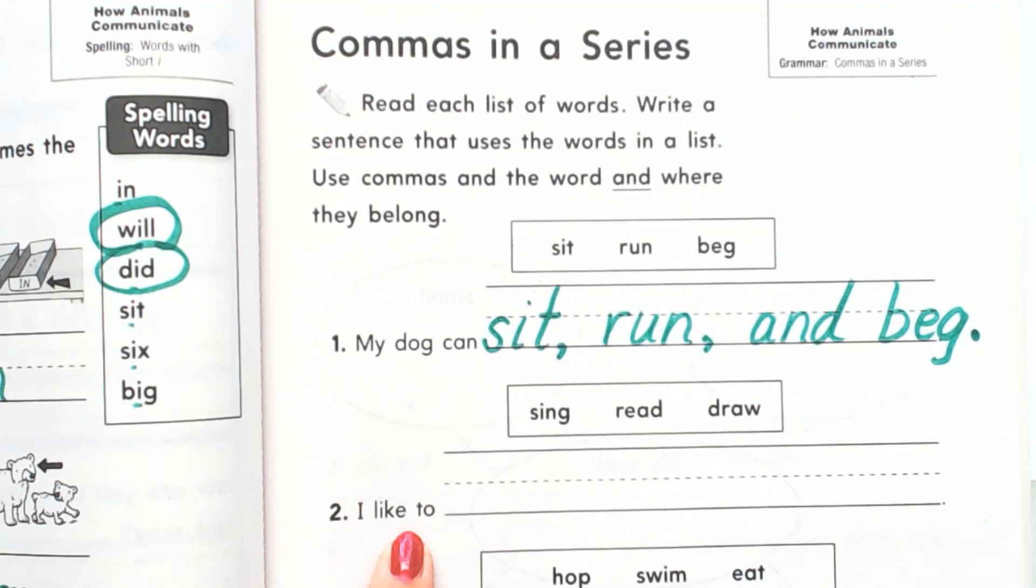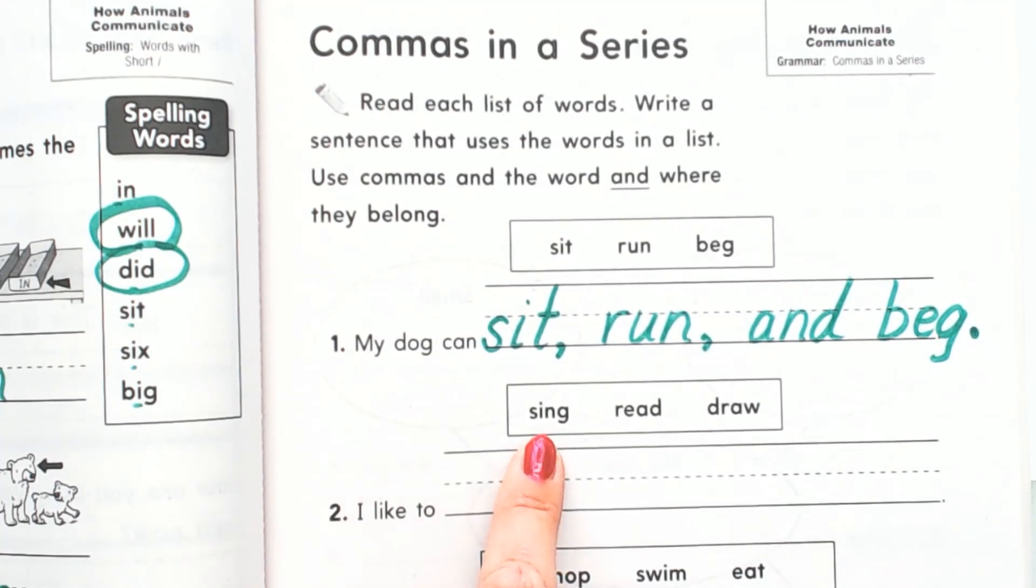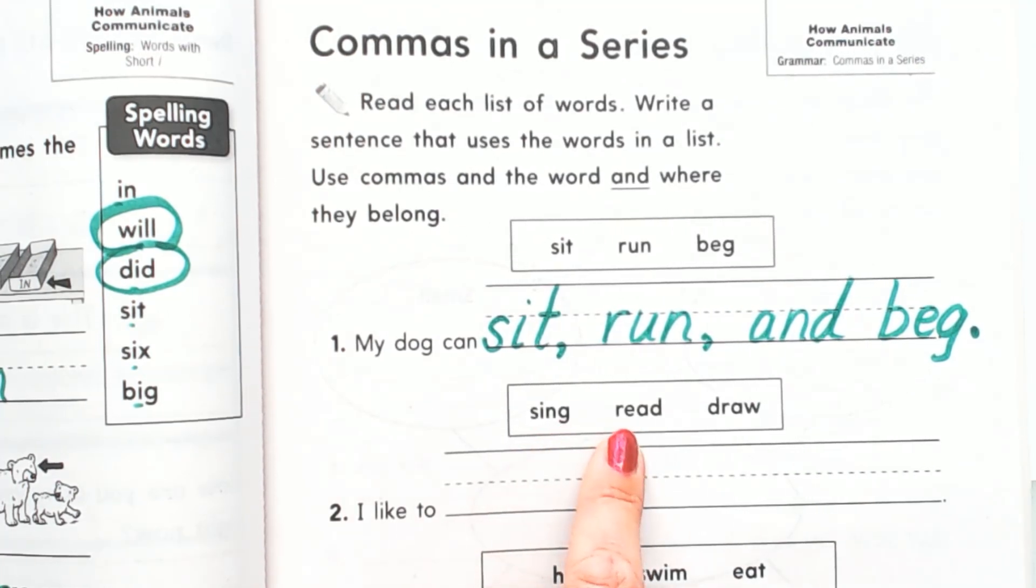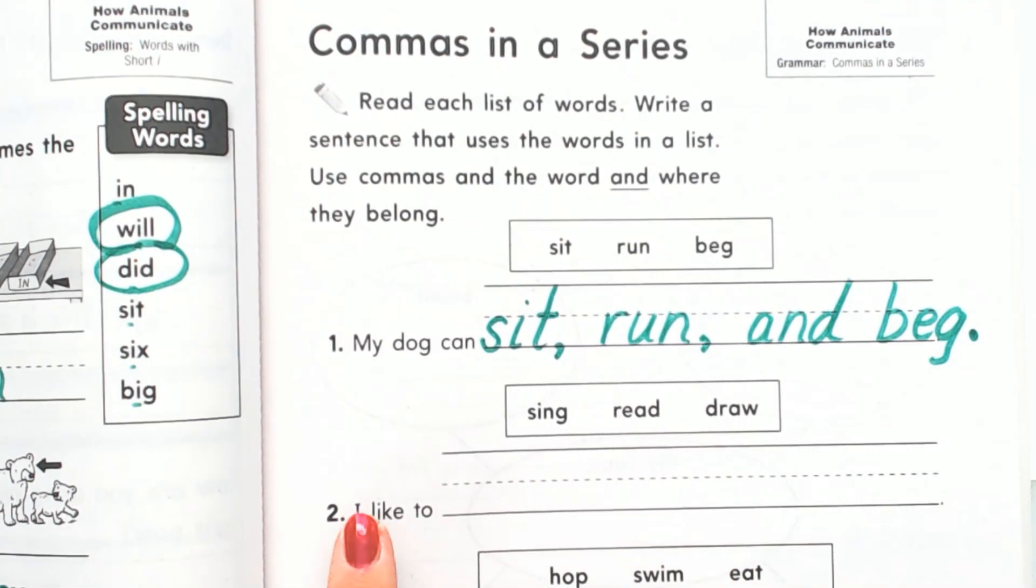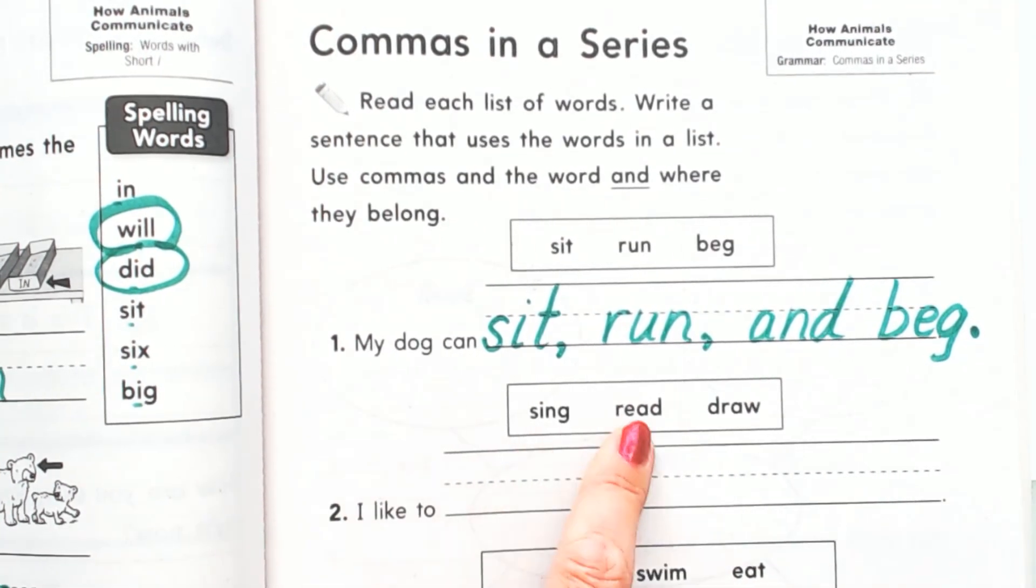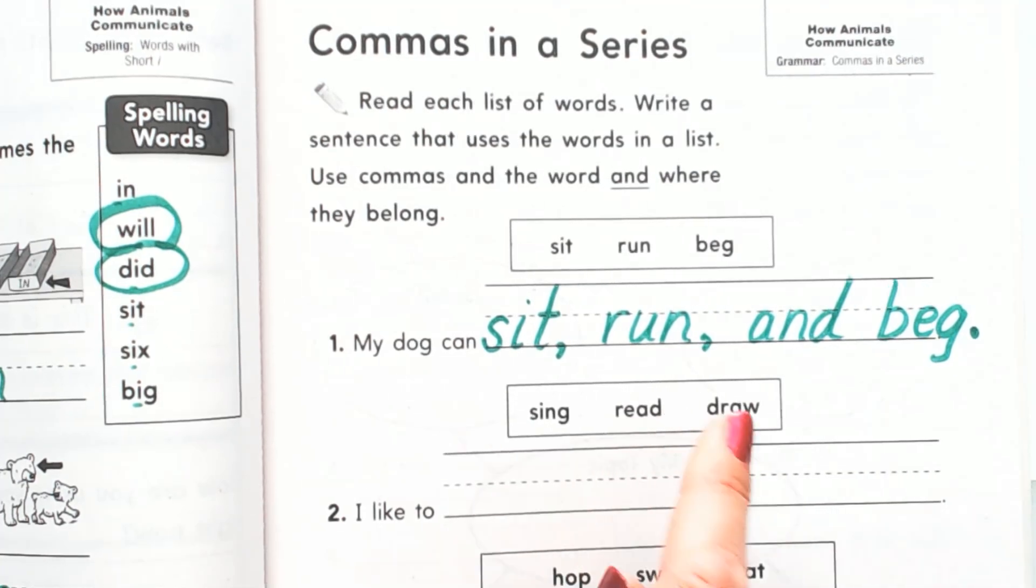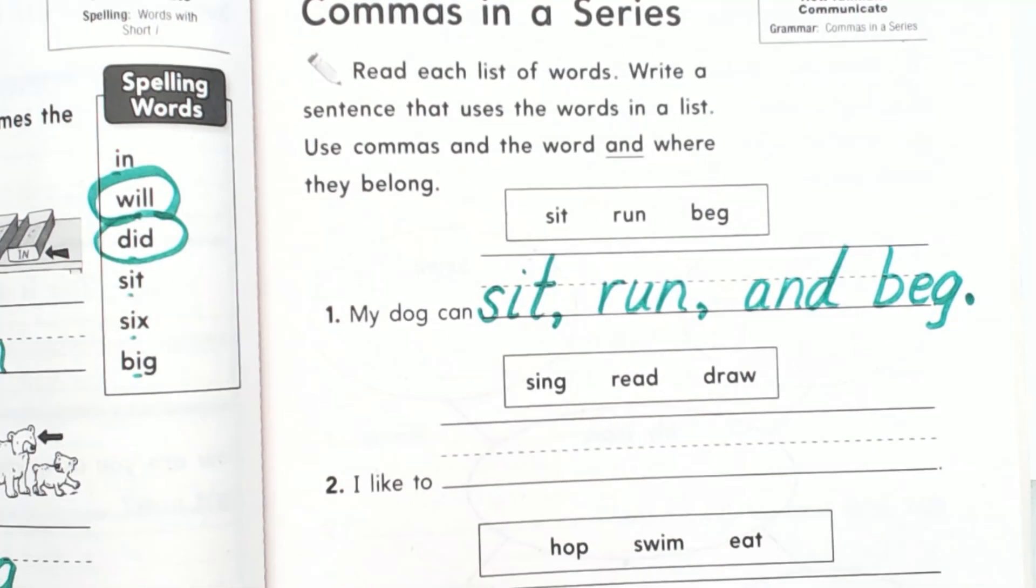I like to, let's see what I'd like to do: sing, read, draw. Yeah, I like to do those things. But I'm going to say 'I like to sing, read, and draw.' And so let's put our commas where they belong.